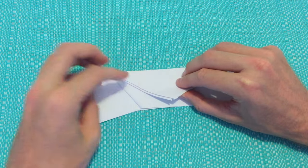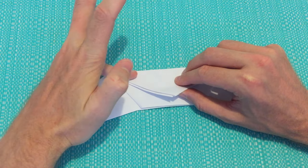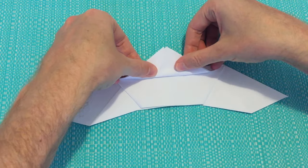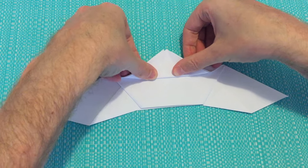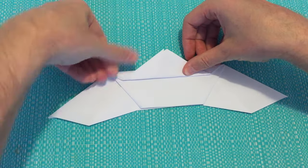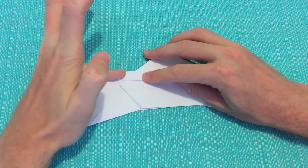Then we're going to be folding it back. We're going to be creating a crease about one small finger width from the top. Just make sure that your nose is pointing straight ahead when you create this crease. As you can see, we've got about one small finger width there.